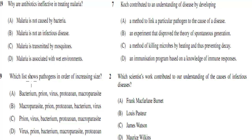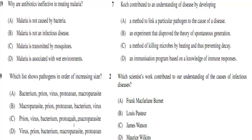The next question: which of the following pathogens are listed in order of increasing size? A. Bacterium, prion, virus, protozoa, macroparasite. B. Macroparasite, prion, protozoa, bacterium, virus. C. Prion, virus, bacterium, protozoa, macroparasite.